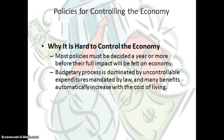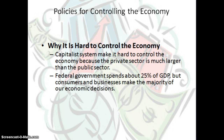When it comes to voting and deciding who is best, voters must understand that it is very hard to control the economy. Most fiscal policies must be decided a year or more before their full impact will be felt, and their effect is really a projection. The budgetary process is also dominated by uncontrollable expenditures mandated by law — such as Social Security and agricultural subsidies. Additionally, a capitalist system makes it hard to control the economy because the private sector is much larger than the government sector.